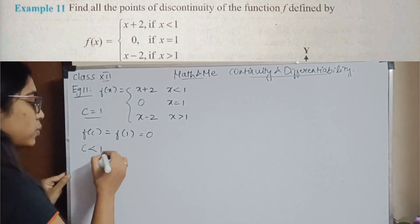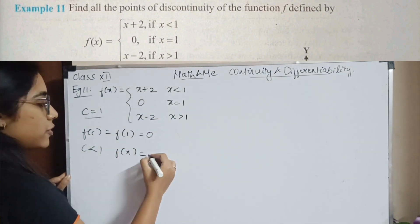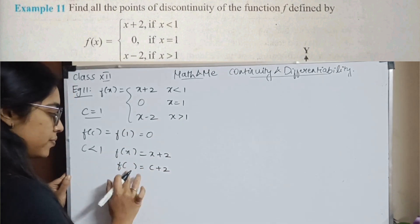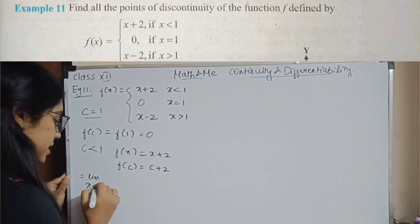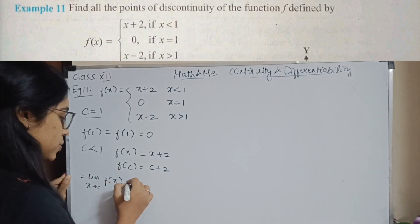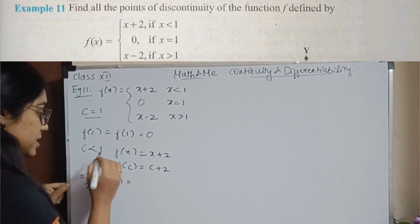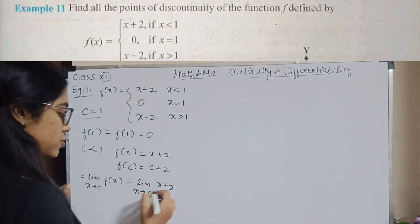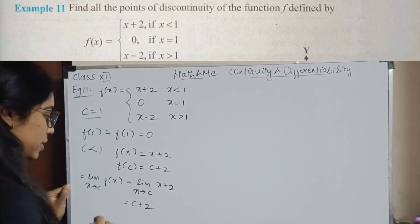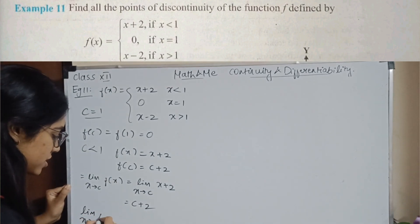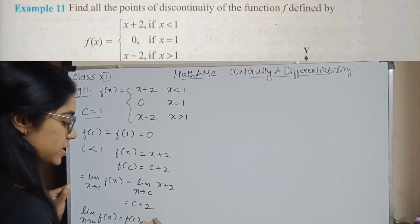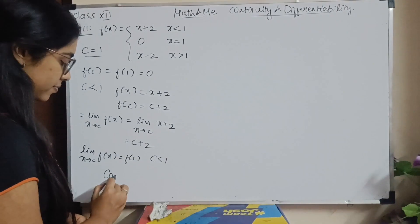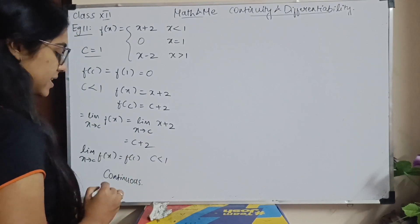What happens when c is less than 1? The one and only function when c is less than 1 is f of x equals x plus 2. So f of c is going to be c plus 2. For the limit: limit x tends to c of f of x is going to be limit x tends to c of x plus 2. Substituting c, I'll have c plus 2. So limit x tends to c of f of x equals f of c for all values when c is less than 1. The function is continuous.